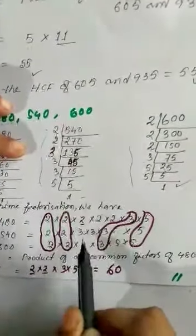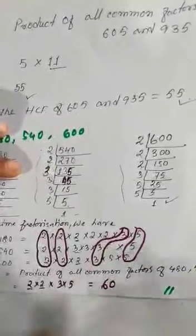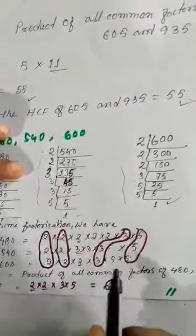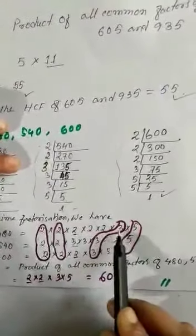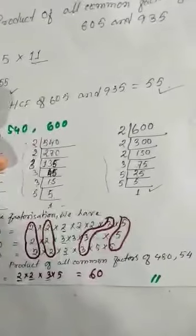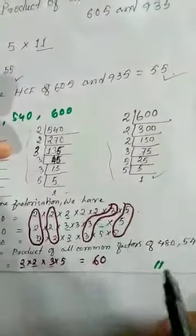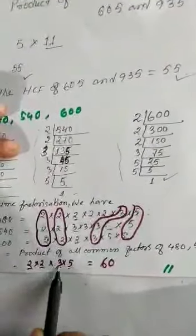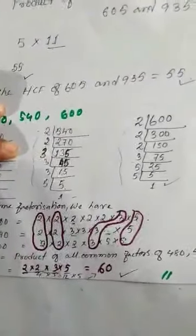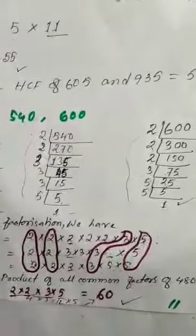For 600: 600 ÷ 2 = 300, 300 ÷ 2 = 150, 150 ÷ 2 = 75, 75 ÷ 3 = 25, 25 = 5 × 5. So 600 = 2 × 2 × 2 × 3 × 5 × 5. Now finding common factors across all three numbers: 2 appears in all three — one 2 is common to all. A second 2 is in 480 and 600 but not in 540, so only one 2 counts. 3 is in all three — one 3 is common. 5 is in all three — one 5 is common. HCF = 2 × 2 × 3 × 5 = 60. I hope the concept of prime factorization is clear. The rest of the sums you can solve by yourself. Thank you.